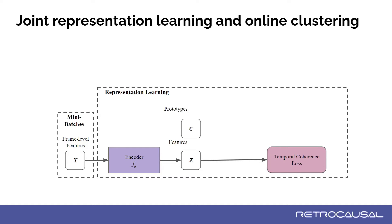To perform online clustering, we learn a set of prototype vectors which act as cluster centroids, denoted here as C. The prototype vectors are initialized at random and learned via backpropagation. Each prototype vector represents a class or step in the activity.